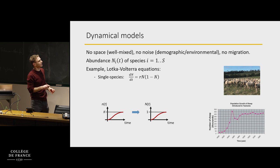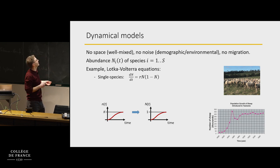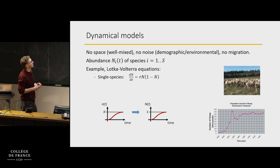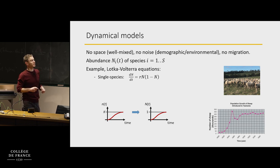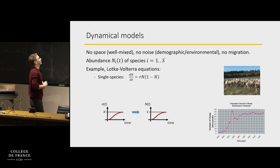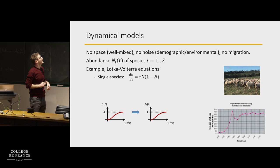The simplest example is a single population. These are sheep introduced to Tasmania in the early 1800s. Initially the population grew exponentially, but that couldn't last forever, and at later times the population stabilized. The simplest equation you could write: you want exponential growth, but then you want it to saturate when you reach some value — that's a logistic equation.